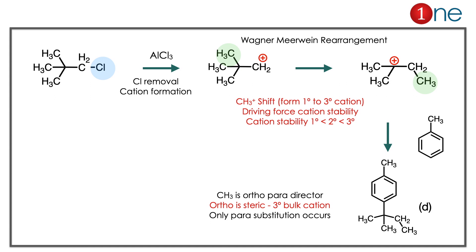The concepts you have to learn here: during a Friedel-Crafts alkylation reaction, if you use a primary halide, it always rearranges into the tertiary or more stable cation. Second, if you have bulky substituents, para substitution is always favorable.